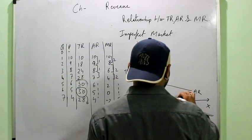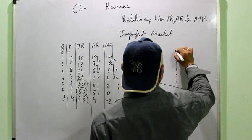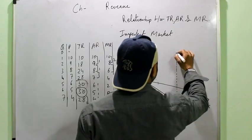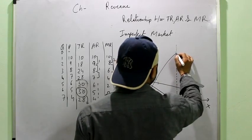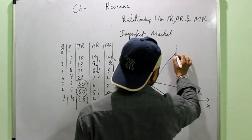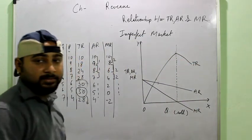Then we also saw that when MR is 0, then TR is maximum. So same you can draw a dotted line like this. Then your TR should be maximum at this point. And then it should start diminishing.